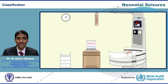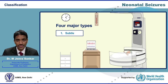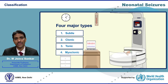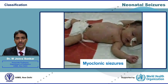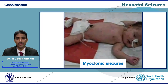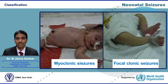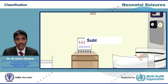Broadly, seizures are classified into four major types: subtle seizures, clonic, tonic, and myoclonic seizures. In general, myoclonic seizures carry the worst prognosis while focal clonic seizures have the best prognosis. Among the four types, subtle seizure is the most common type.